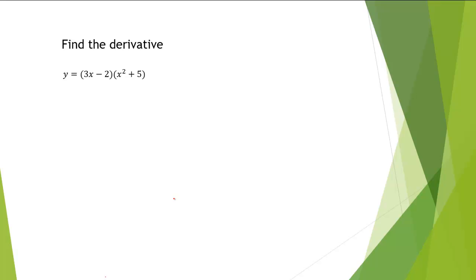Since we're finding a derivative of a product, we'll use the product rule. The product rule for derivatives states that the derivative of a product, u times v, is equal to u prime times v plus v prime times u. We can identify u and v as the factors in our problem. Our first factor, 3x minus 2, we'll set that equal to u.